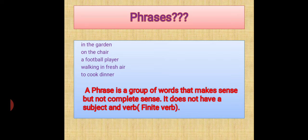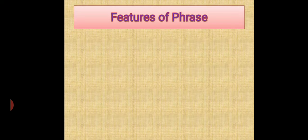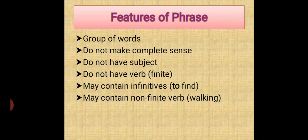Now, coming towards the features of phrases. It is a group of words. It does not make complete sense. It does not have a subject. It does not have a verb. It may contain infinitives — what is an infinitive? To plus verb in the first form. It may also contain a non-finite verb. Where your verb is not changing, that becomes your non-finite verb.